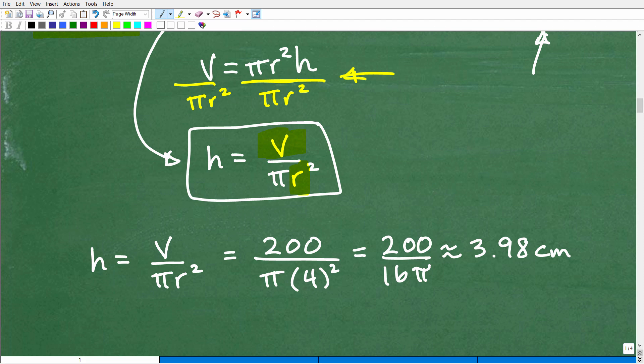Our volume is 200 centimeters cubed, but we'll just disregard the units of measure for now. So it's going to be 200 over π. The radius is 4, so it's going to be 4 squared. So we have 200 and then we have π times 4 squared is 16, so 16 times π. You could leave your answer like this.